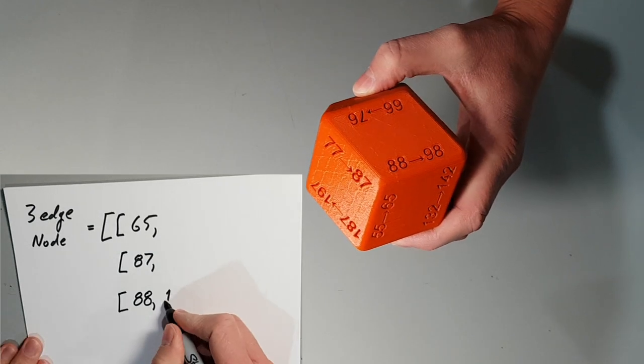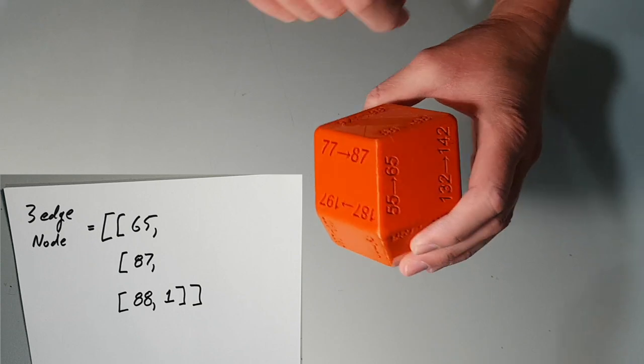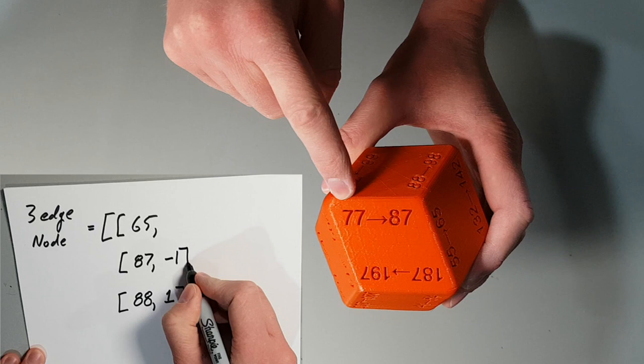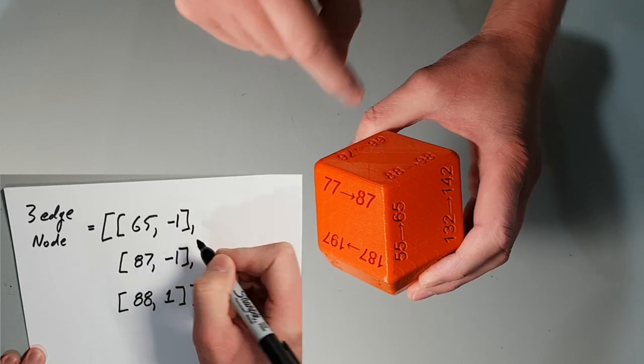In the case of both 65 and 87, as we progress down the strip away from the node, we must decrease the LED number by 1 to progress through the strip to get to 55 and 77 respectively.